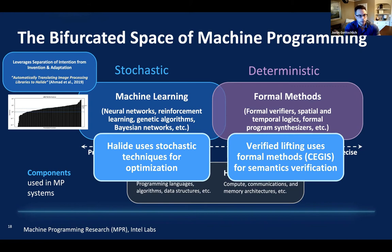It's the fusion of both of these things together that gives you the amazing results from that paper. The first step uses this formal system to lift out the semantics, then you lower to Halide — an intentional programming language. Because only intention is specified, it frees the machine to explore the space of invention and adaptation, which allows it to do superhuman optimizations.